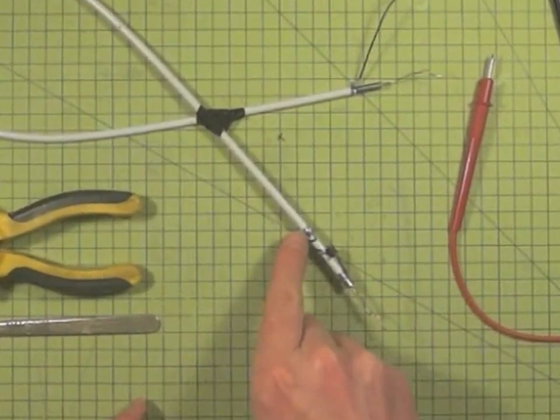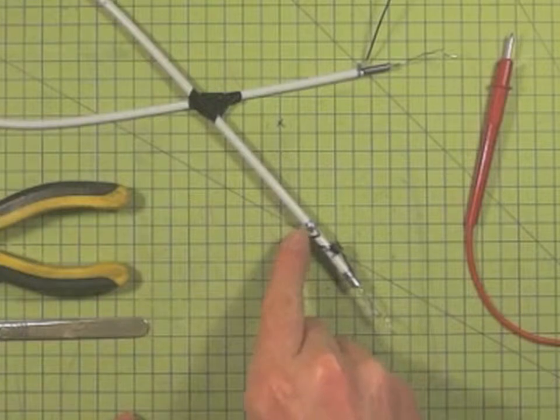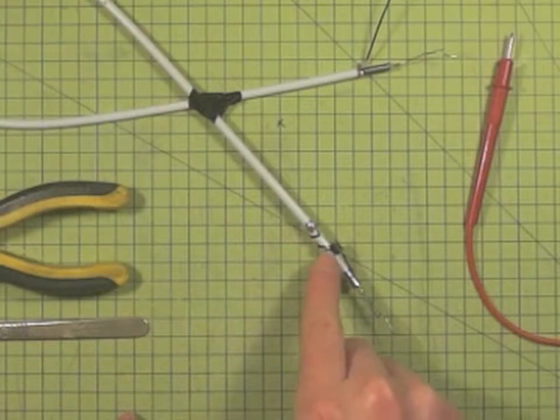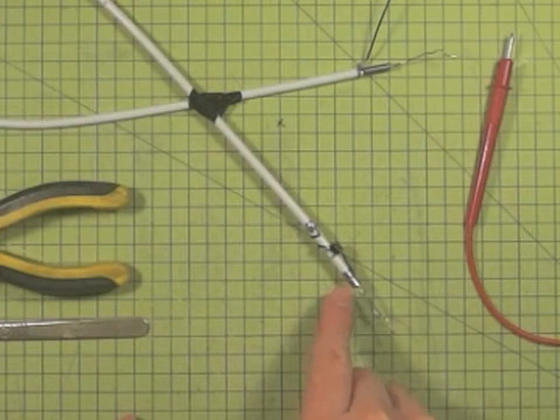We cut another little section out of the brake cable outer, wire that up to the little mini switch, and then wire from the other side over to the front of this.